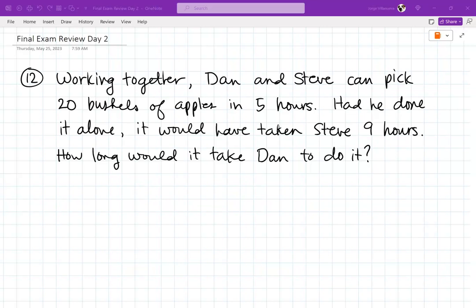It says, working together, Dan and Steve can pick up 20 bushels of apples in five hours. Had he done it alone, it would have taken Steve nine hours. How long would it take Dan to do it? There's a formula for this. The total time T equals the product of both of their times divided by the sum of both of their times: T = xy/(x+y).